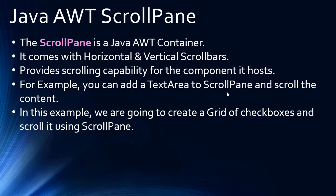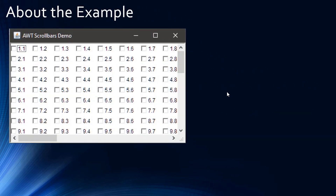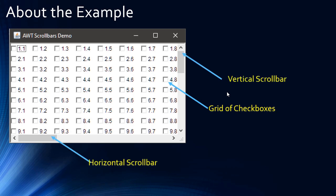This is the example we are going to create. You can see there are multiple checkboxes, and you can see the scroll bars as well. That's the grid of checkboxes — you are viewing a portion of the checkbox grid, and there are vertical and horizontal scroll bars so you can scroll the entire content of this checkbox grid.